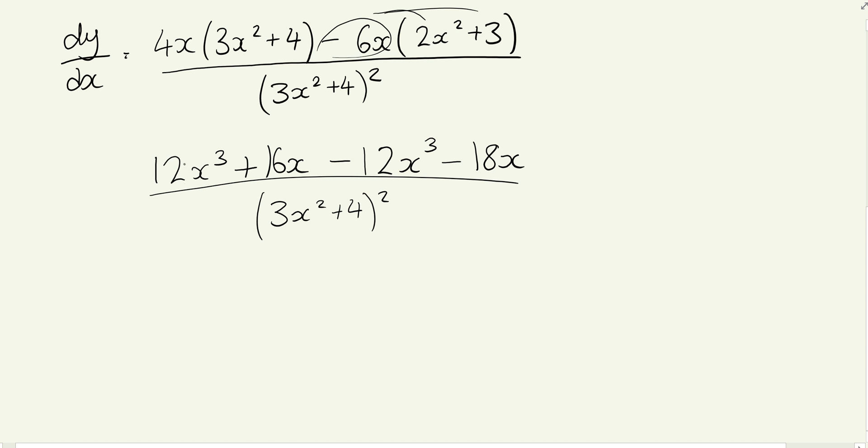We should notice we've got a positive 12x³ and a negative 12x³, so those two things will cancel each other out, leaving 16x - 18x over (3x² + 4)². That simplifies to -2x over (3x² + 4)². So we can deduce that p is -2.